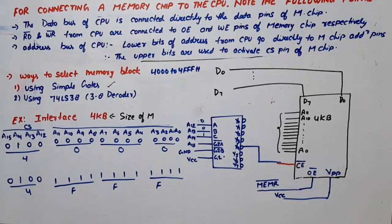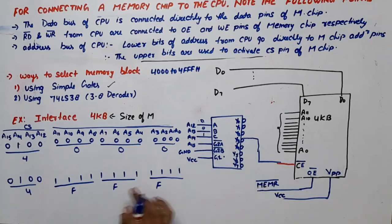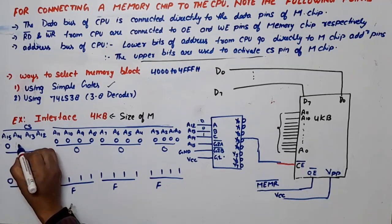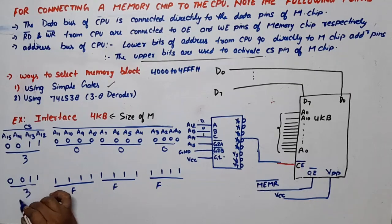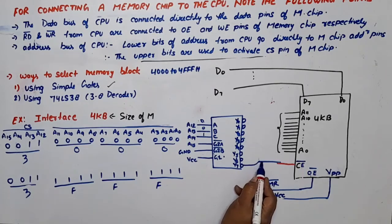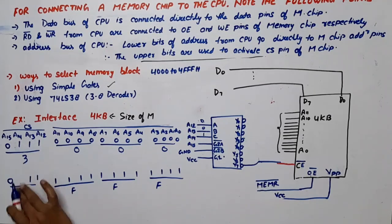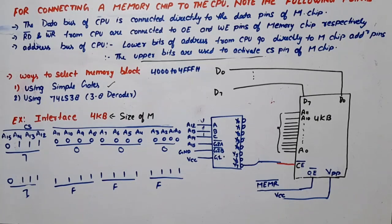If chip select is connected with Y3 instead, Y3 means the input value is 0,1,1 (binary), so A14=0, A13=1, A12=1. The upper nibble becomes 3, giving address range 3000H to 3FFFH. If connected with Y7, the input value is 1,1,1, giving upper nibble 7, and address range 7000H to 7FFFH. This demonstrates how the address range changes according to which decoder output is connected to chip select.